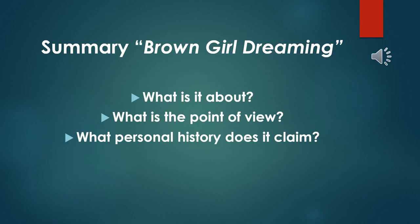Now summarizing Brown Girl Dreaming — whenever we want to summarize this precious work, we have to ask ourselves three different questions: What is it about? What is the point of view? And what personal history does it claim? Brown Girl Dreaming is a memoir in verse written by Jacqueline Woodson. The book recounts her childhood and coming-of-age experiences as an African-American girl growing up in the 1960s and 1970s.